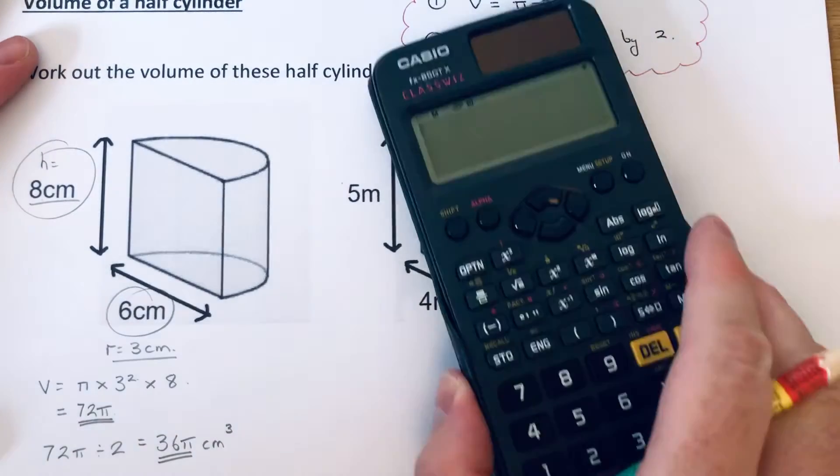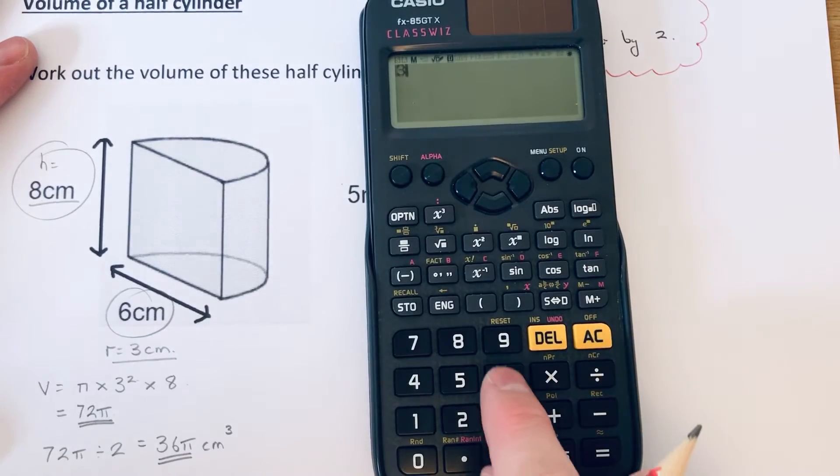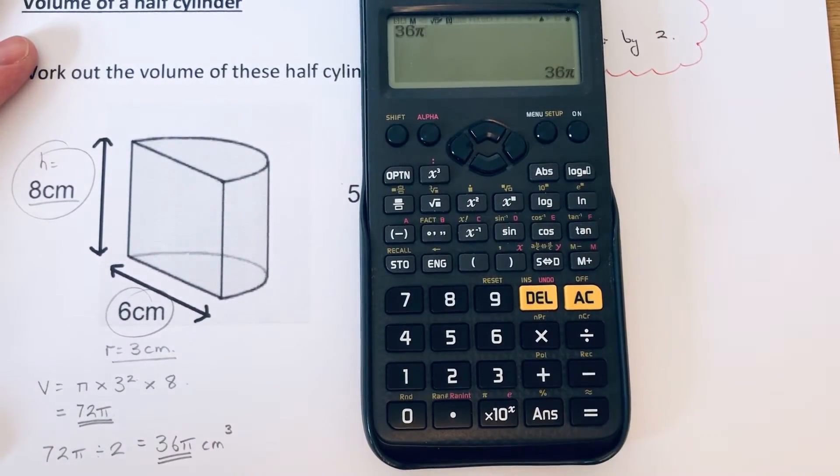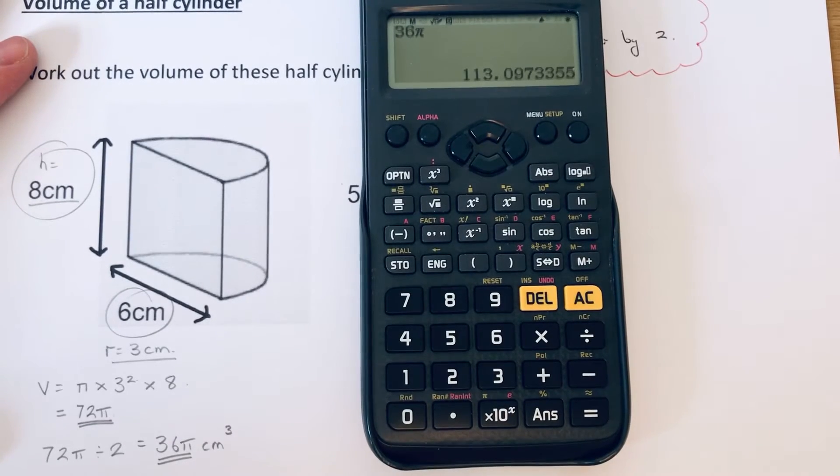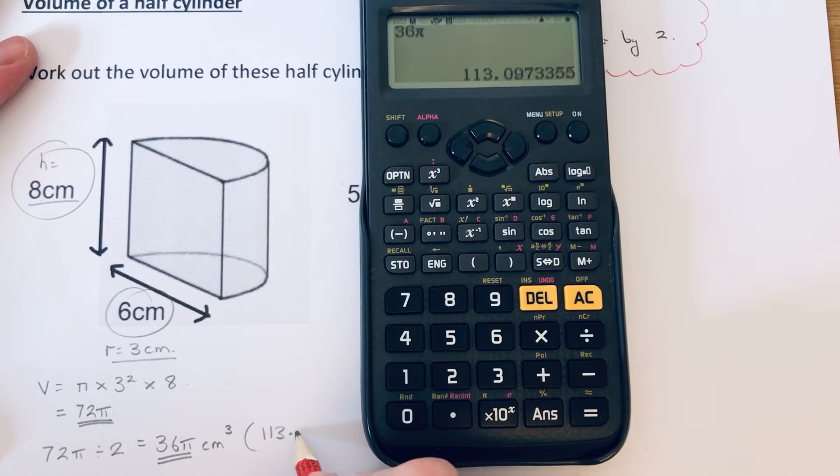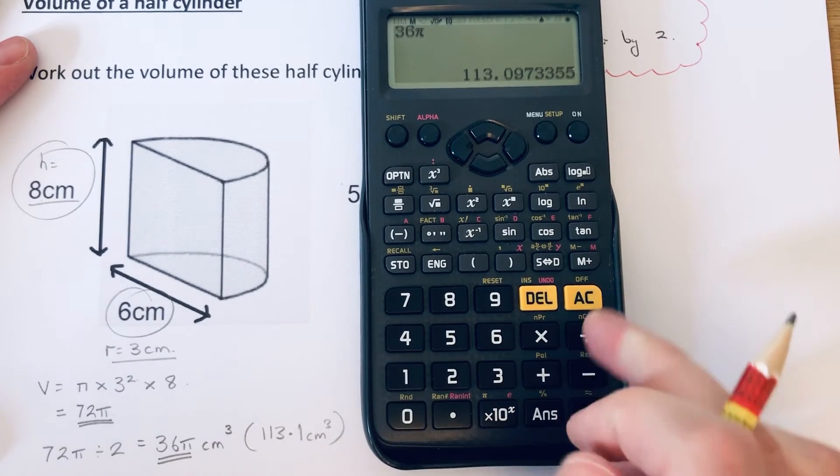If you want this as a decimal answer, just type 36, shift π, equals, and we get 113.1.